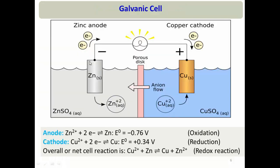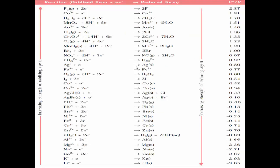A typical example is the Daniel cell — a type of galvanic cell with two electrodes: zinc dipped in zinc sulfate solution and copper dipped in copper sulfate solution, connected by an electric wire. From the electrochemical series, metals arranged by electrode potential tell us that metals at a higher level have high oxidizing power and will oxidize materials at a lower level by taking their electrons.